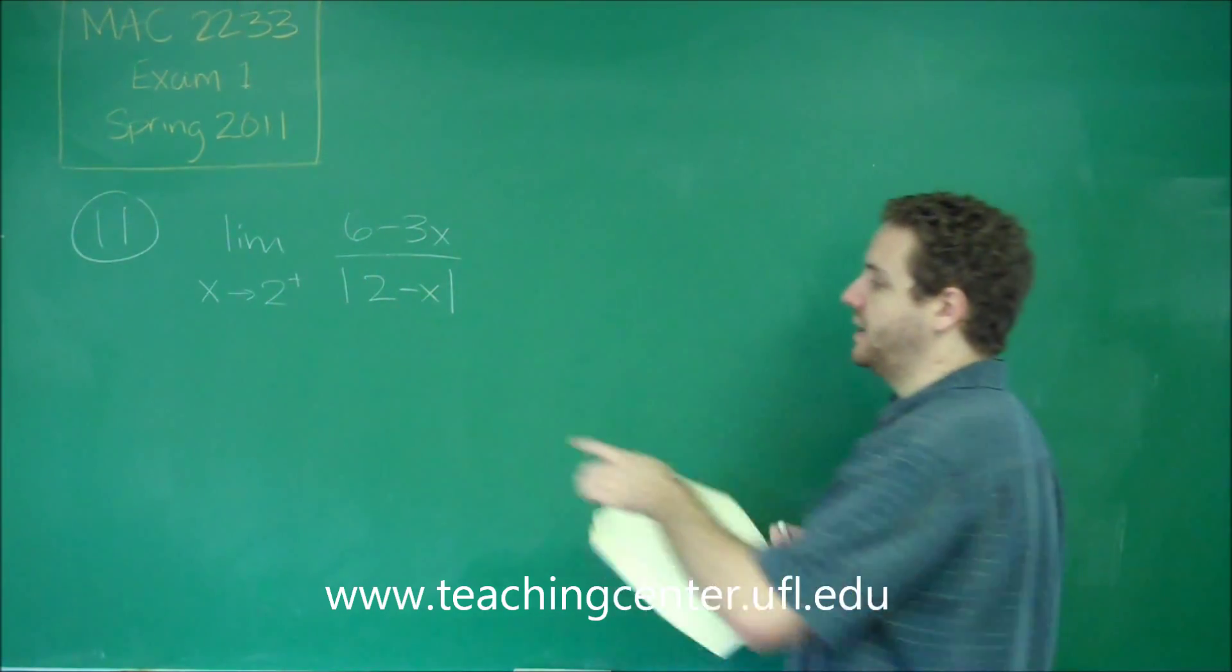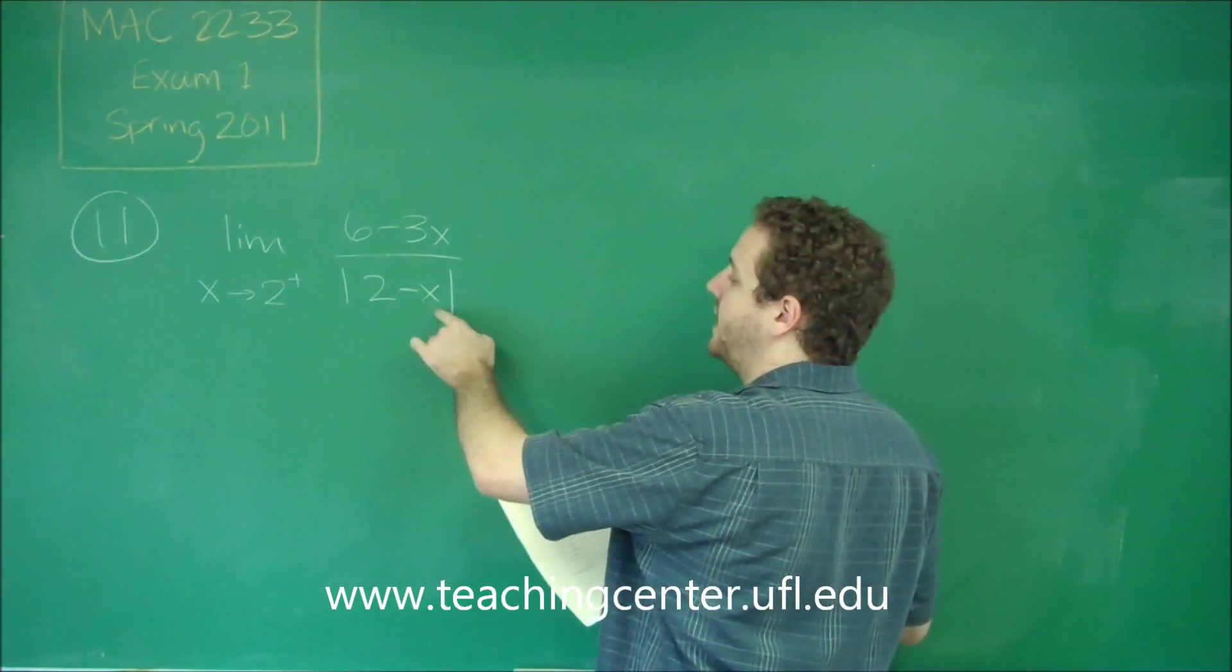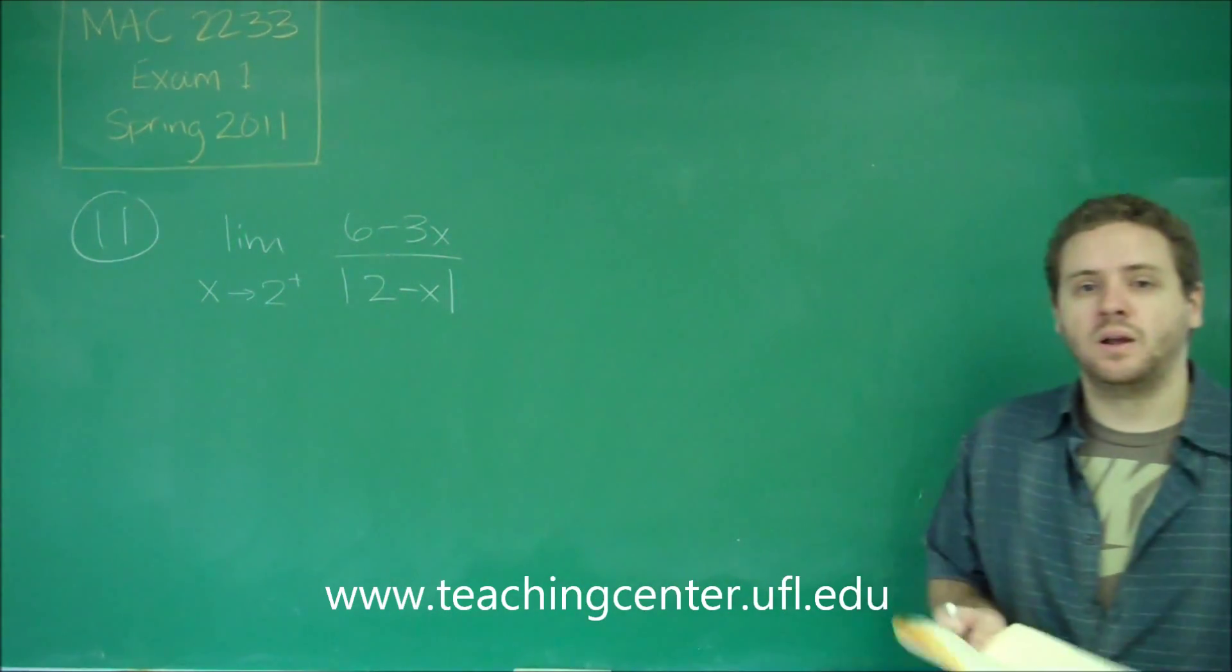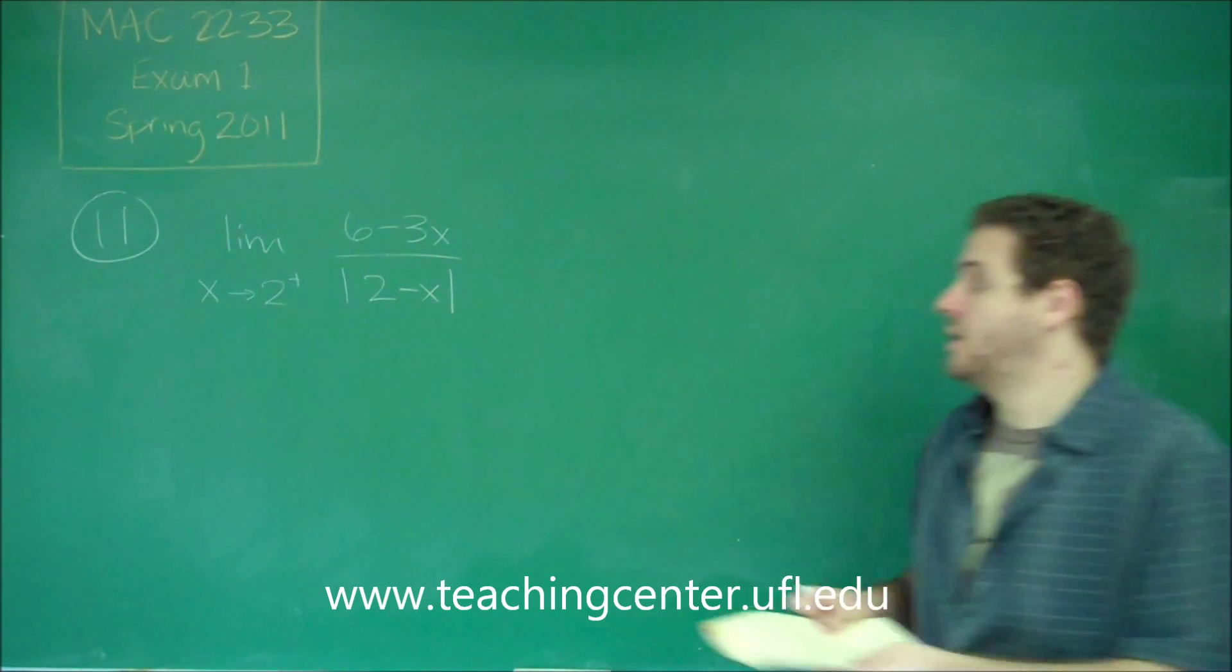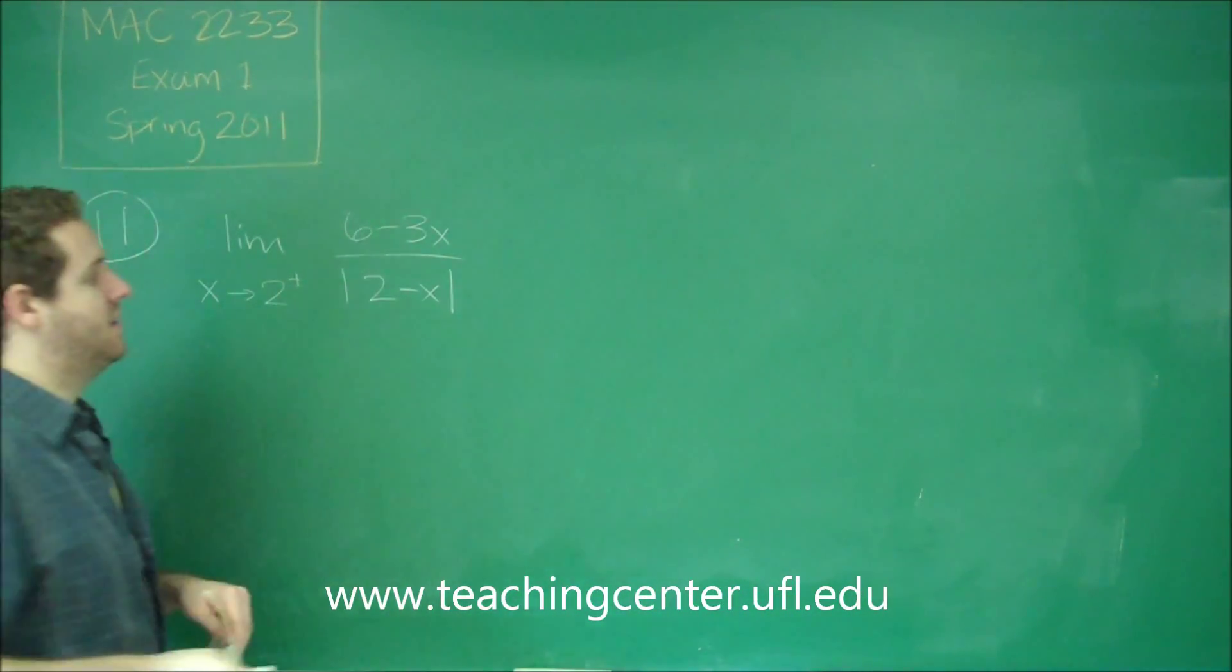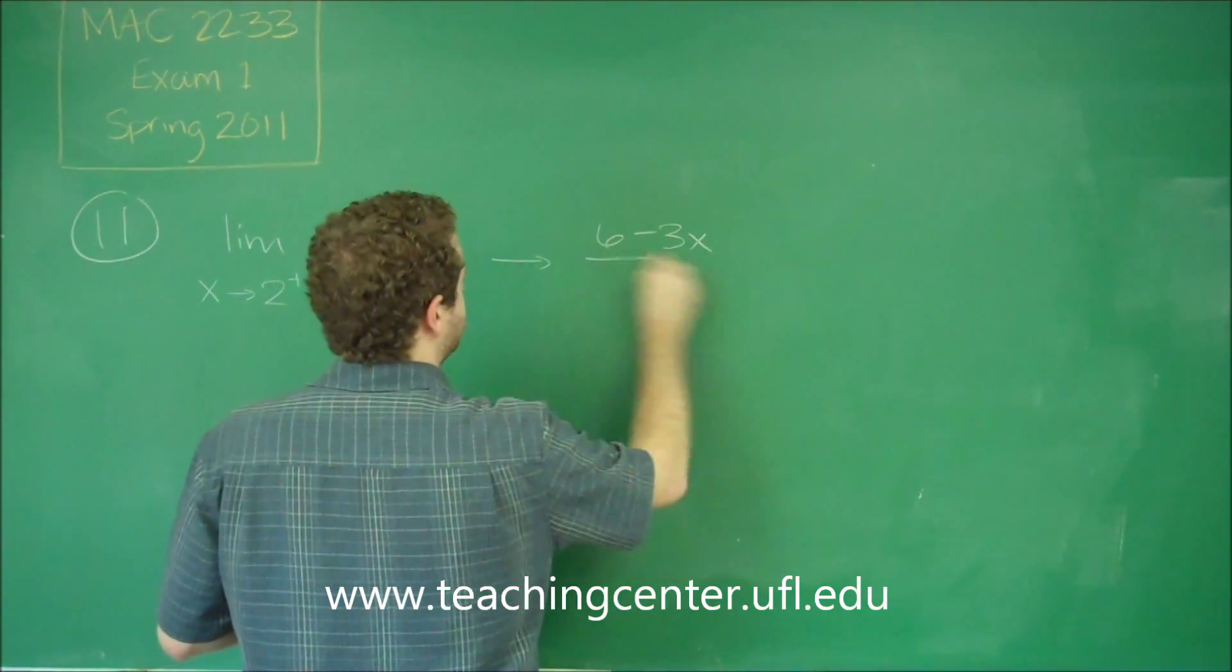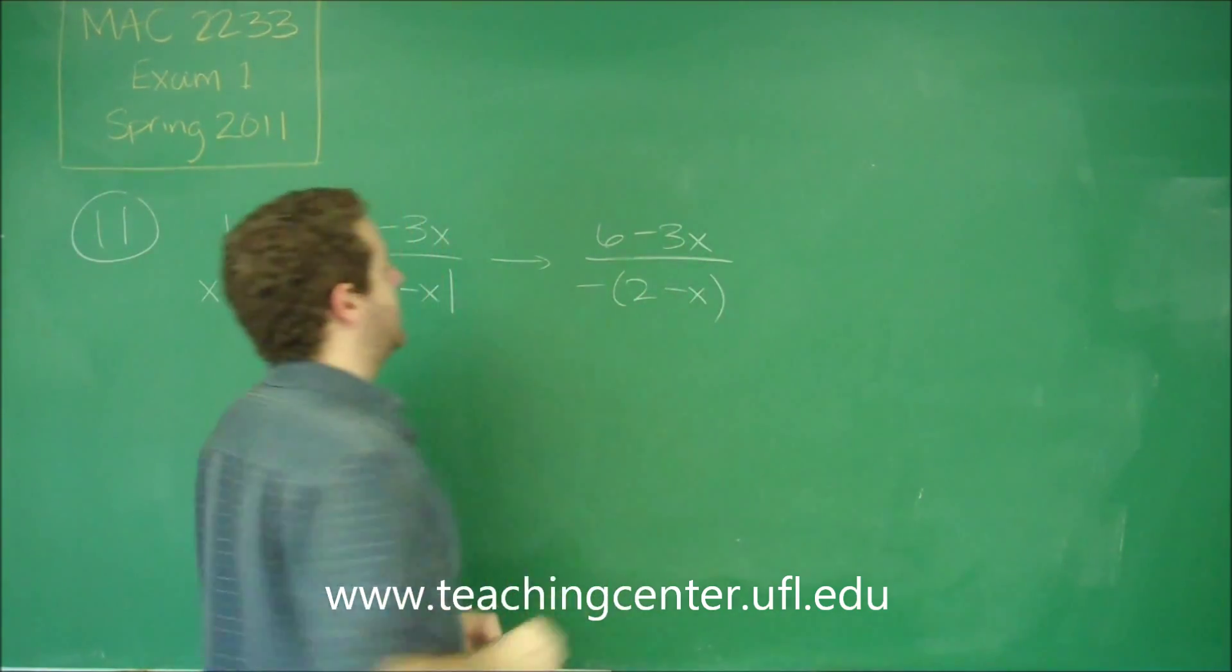So we're plugging in a number larger than 2. If we do 2 minus a number larger than 2, that's definitely going to be negative. So we know no matter what, what's inside here is going to be negative. And if so, we can rewrite it with a negative sign out front.